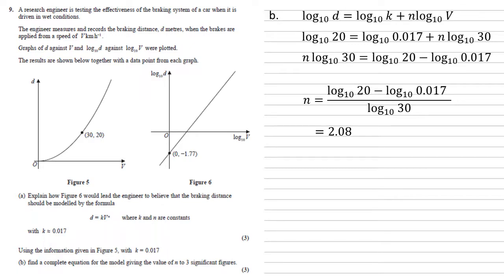Dividing both sides through by log 30 and putting this into our calculator gives us that n equals 2.08. We know that k is 0.017 and we've just worked out that n is 2.08, so we can say that d equals 0.017 times v to the power of 2.08.